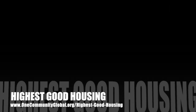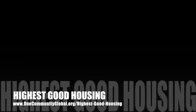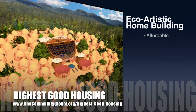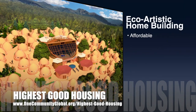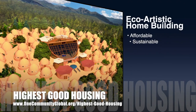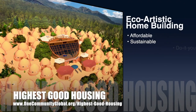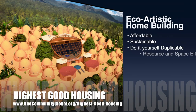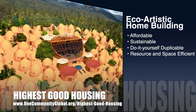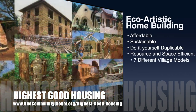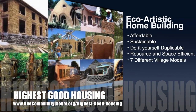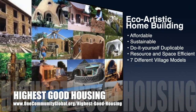The One Community approach to Highest Good Housing is eco-artistic home building that is affordable, sustainable, do-it-yourself duplicable, resource and space efficient, and consists of seven different sustainably constructed village models.